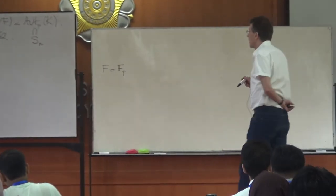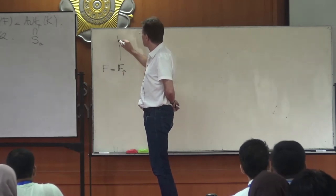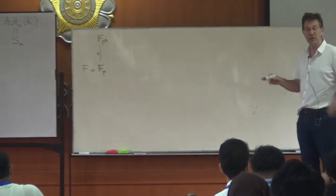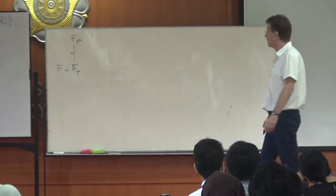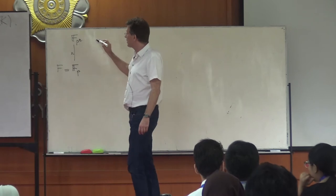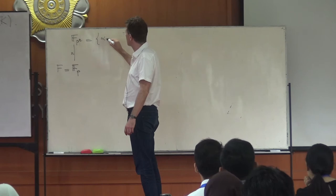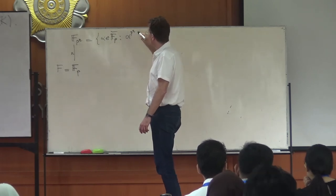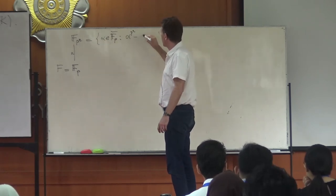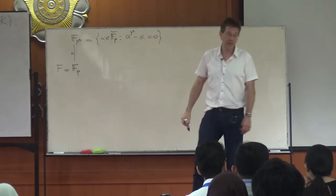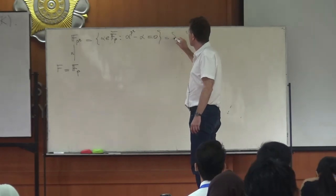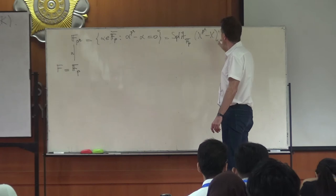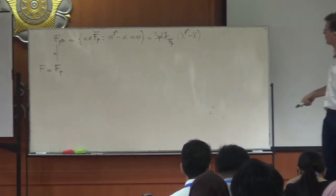For finite fields, the simplest example is F = 𝔽_p. An extension of degree n is called 𝔽_{p^n}, having p^n elements. Over ℚ there are infinitely many quadratic fields; over finite fields there is just a single quadratic extension. This field consists of those elements α in the algebraic closure satisfying α^{p^n} − α = 0, so it is the splitting field of x^{p^n} − x over 𝔽_p.